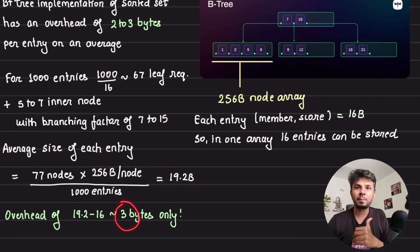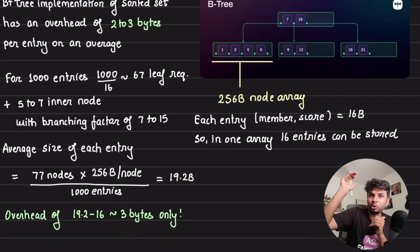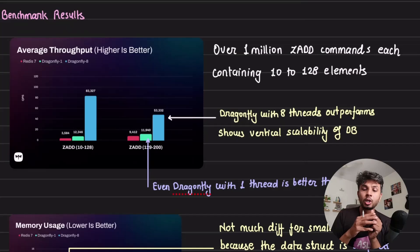Here my average size of node would be 19.2, of which my essential is 16 bytes - the score and member. So the overhead for this is only 3 bytes. From 37 byte overhead for skip list implementation to 3 byte overhead for B+ tree implementation, this is a humongous save. This is theoretical. Let's see it in action.